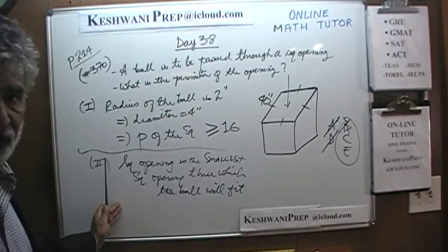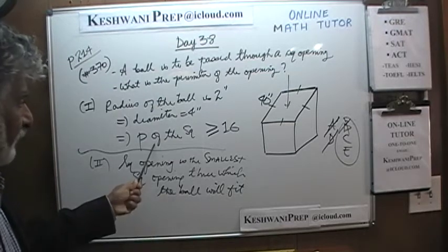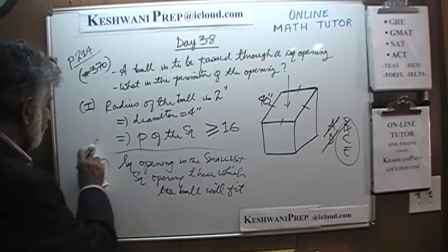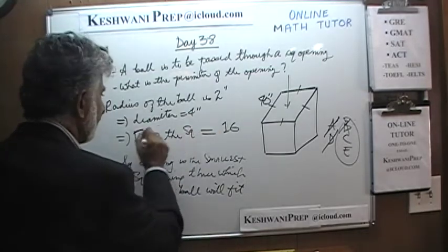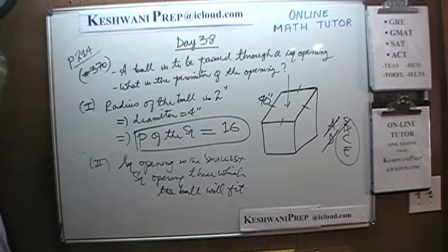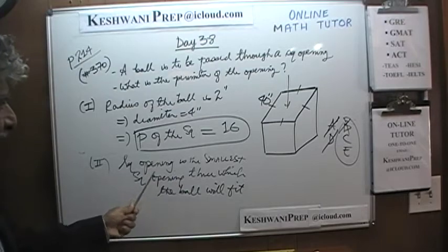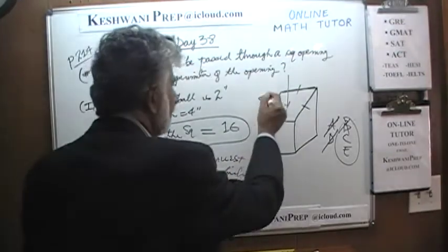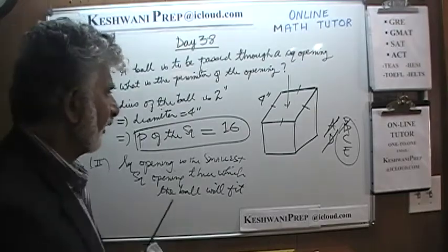But putting the two statements together does the job perfectly, because now we know it is the smallest opening. By the time we put the two statements together, we can safely arrive at the conclusion that the perimeter must be 16 inches — because it is the smallest opening through which the ball can go through. Anything less, the ball wouldn't have gone through. It is the smallest one, which means the length has to be exactly 4 inches, which is the diameter of the ball. The answer is C.